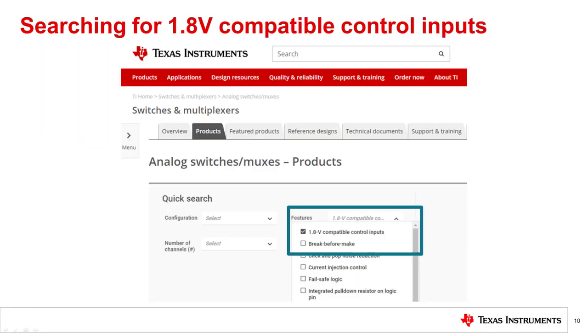To find a switch with 1.8 volt compatible control inputs, filter by features in the Analog Switches and Multiplexers product search tool found in the Switches and Multiplexers product tree on TI.com.